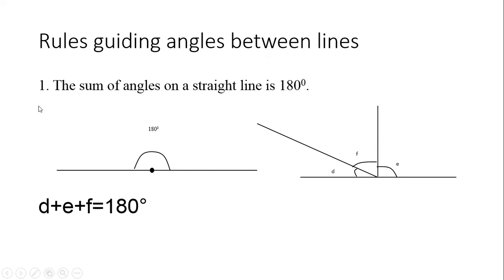The first rule that guides angles between lines is that the sum of angles on a straight line is 180 degrees. Angles on a straight line, when added together, give 180 degrees. So g plus f plus e equals 180 degrees. It's just like dividing 180 into three parts — g plus e plus f equals 180 degrees. That is the sum of angles on a straight line.